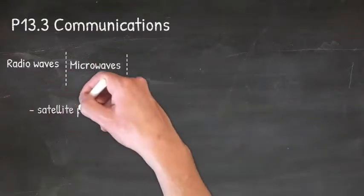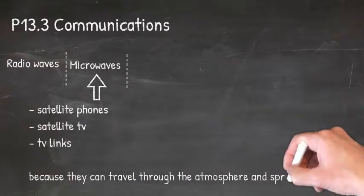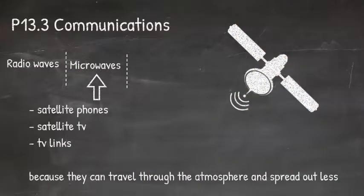So because of this, microwaves are used for satellite phones, satellite TV, and TV links. This is because they can pass through the atmosphere and spread out less.